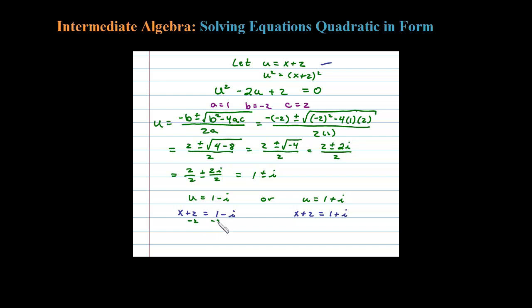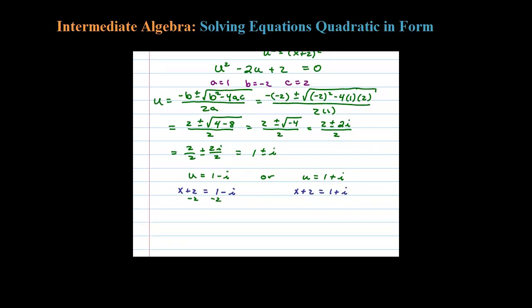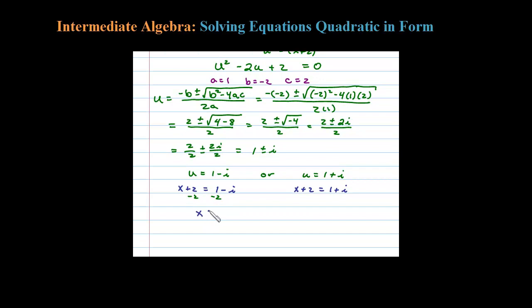And then to finish this off, let's just solve for x here by simply subtracting 2. So for one of the solutions, it happens to be x equals -1 minus i.